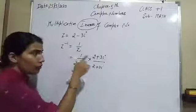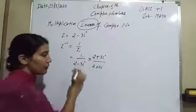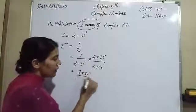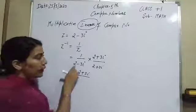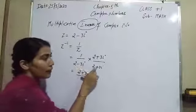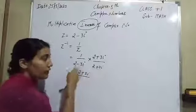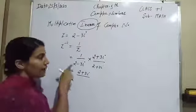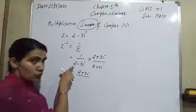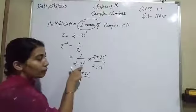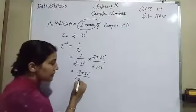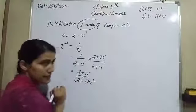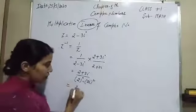After that you do the multiplication: 1 into 2 plus 3 eta gives 2 plus 3 eta in the numerator. In the denominator, here is a minus b into a plus b, so we can use the identity a squared minus b squared. The value of a is 2 and the value of b is 3 eta.